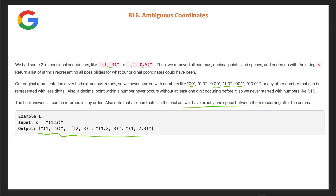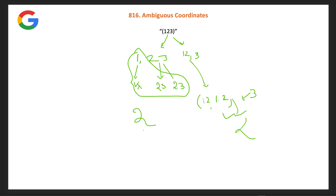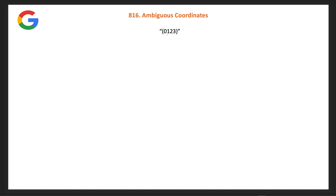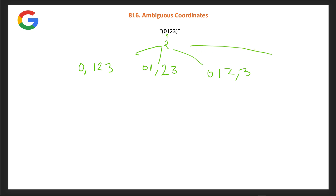So how do we solve this? First, we place the comma to divide the string into a left part (x-coordinate) and right part (y-coordinate). For another example '0123', we start placing the comma from index 2, branching into: '0' and '123', '01' and '23', or '012' and '3'.